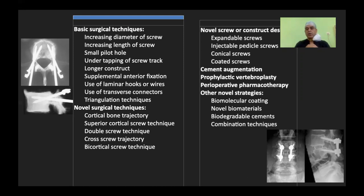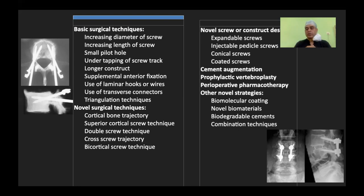The other concept involves noble screws or constructs: you can use expandable screws, injectable pedicle screws through which you can inject cement to augment the screws, hydroxyapatite-coated screws, cement augmentation, prophylactic vertebroplasties, and multiple other strategies by which you can improve your construct and pullout strength.